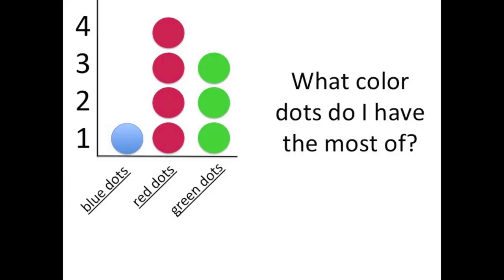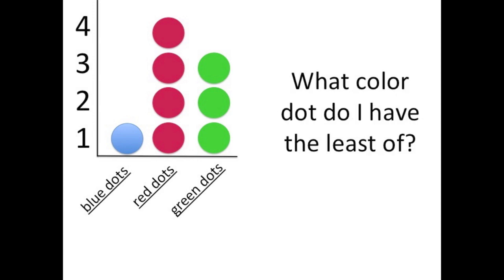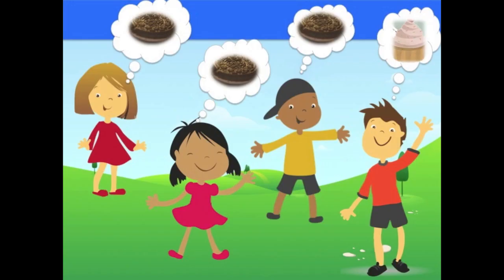When our data is in a chart, it makes it easy to answer questions. What color dots do I have the most of? I have the most red dots. Can you figure out how many green dots I have? I have three green stickers. Can you tell what color sticker I have the least of? Blue. Looking at all of our data in a chart helps us answer all of these questions about the numbers we're dealing with.